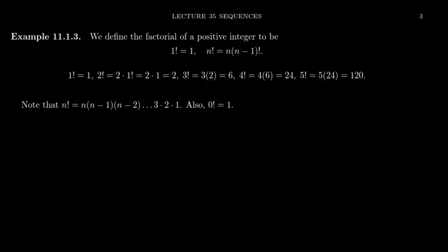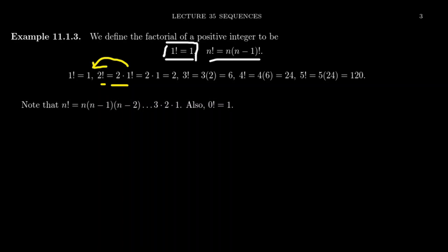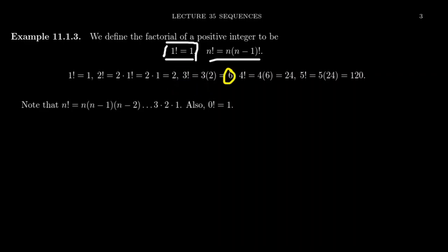We can define the factorial sequence recursively. We start with the base case that one factorial equals one. Then we define n factorial recursively as n times (n minus one) factorial. So one factorial is one by definition. Two factorial is two times one factorial, which is two times one, equaling two. Three factorial is three times two factorial — three times two equals six.